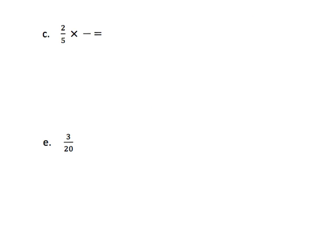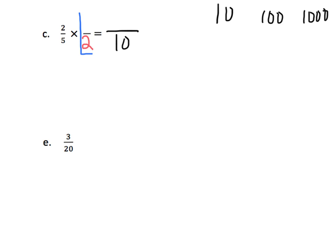On these problems, they're giving us less scaffolding, so we have to do more of the heavy lifting. We're trying to turn 2 fifths into a fraction where the denominator is a power of 10 — 10, 100, 1,000, etc. I can see that 5 can easily be turned into 10 by multiplying by 2. So the fraction equivalent of 1 is 2 over 2, meaning 2 times 2 is 4. So 2 fifths is equal to 4 tenths, which gives us the decimal 0.4.